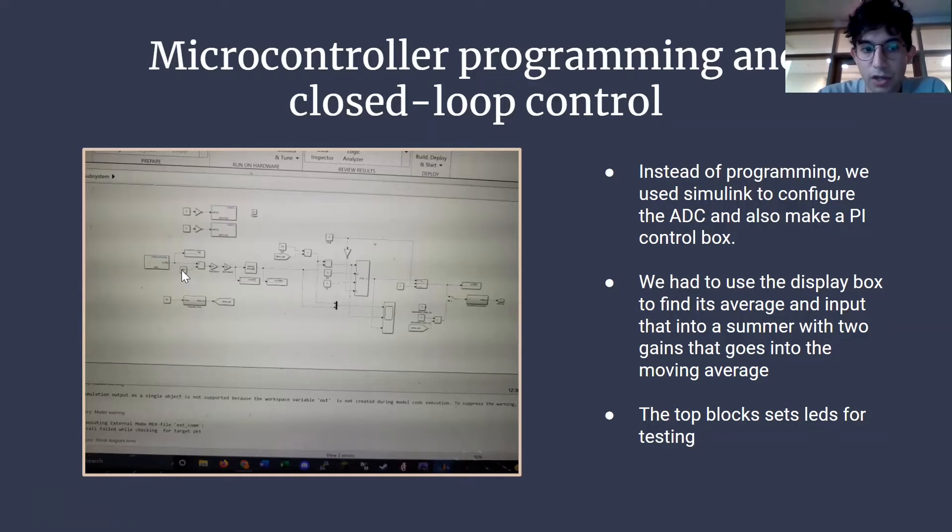Over here, we have a constant block that has to match the average of the display block. You kind of just eyeball it, look at what you get. Then you adjust your second gain until your moving average is between 0 and 1. Then this runs into a PI control box. And through trial and error, we found that the KP was equal to 0.5 and KI was equal to 0. Then from there, it went to the output.